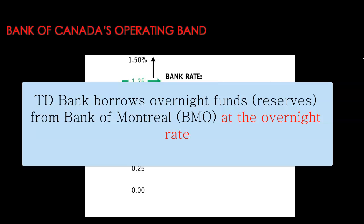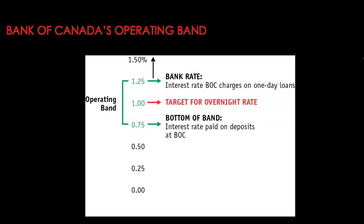For example, if TD needs additional funds to manage its liquidity constraints, it can borrow money from another bank like BMO and will pay some interest rate to BMO. That interest rate is determined in the overnight funds market and is referred to as the overnight interest rate. If the Bank of Canada targets this particular interest rate, it ends up controlling all other short-term and long-term interest rates in our economy.